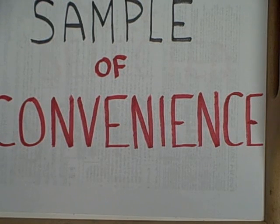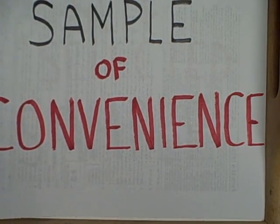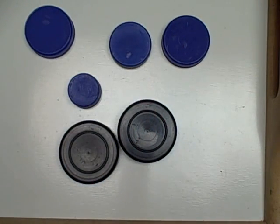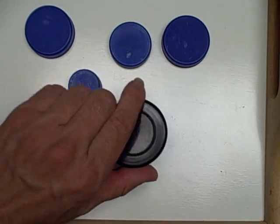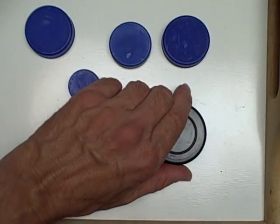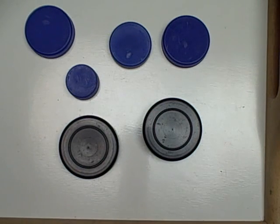One way that sampling should not take place is by a mere sample of convenience — in other words, the sample that was easiest to get. This is the way that most student projects are actually done. For example, here we have a sample of six bottle caps. It's easiest for me to grab these two, but that sample of convenience was not representative because the two cases that were easiest to grab were not really representative of the population.